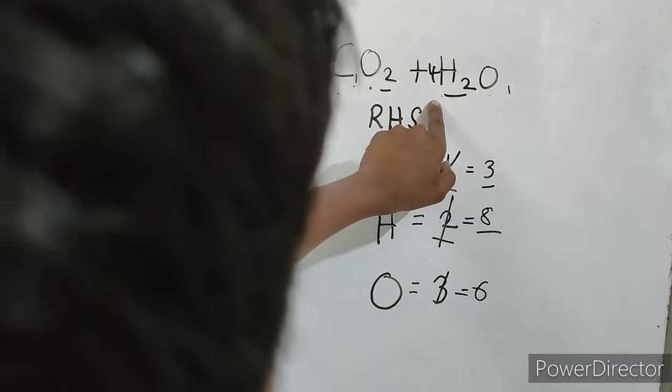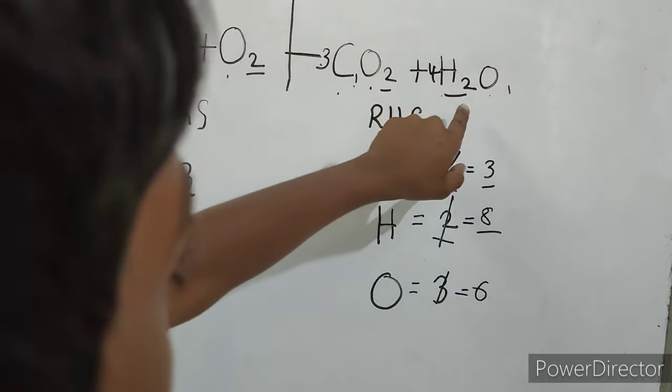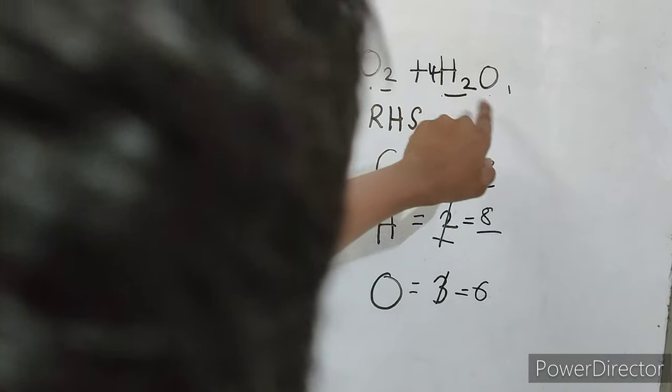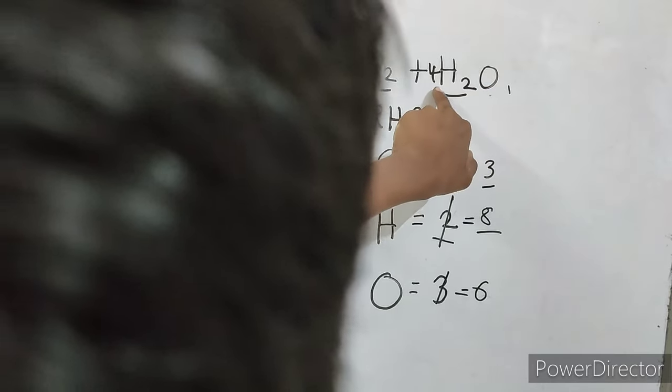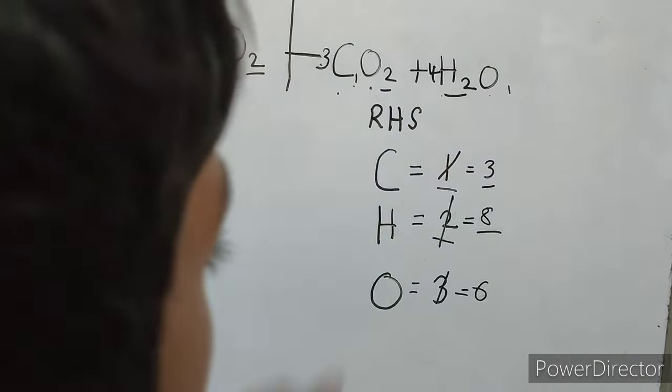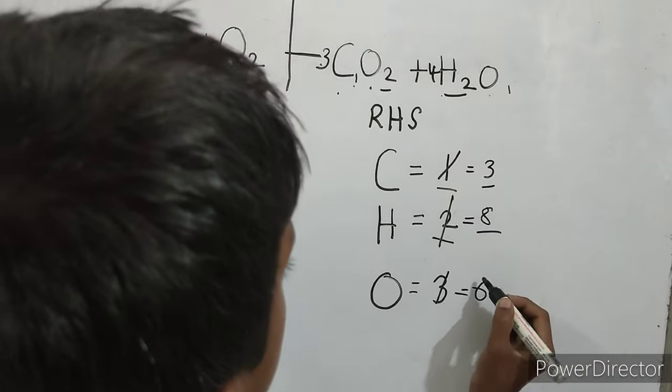So if this number is 4, then 4 times 1 is 4. So 6 plus 4 equals 10.